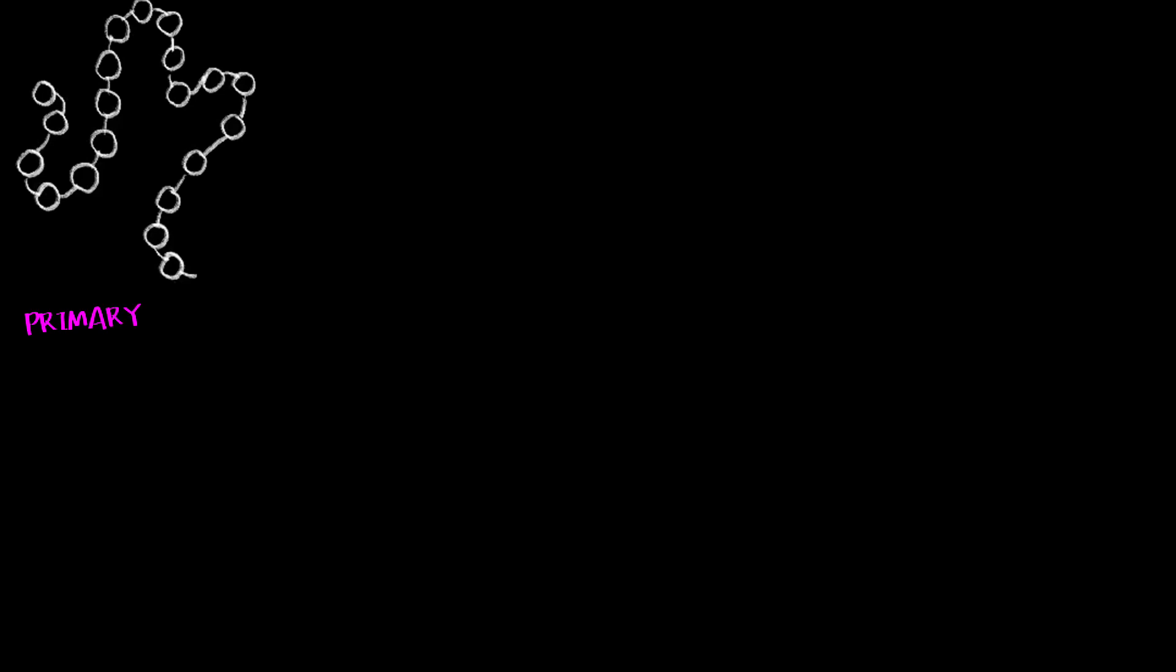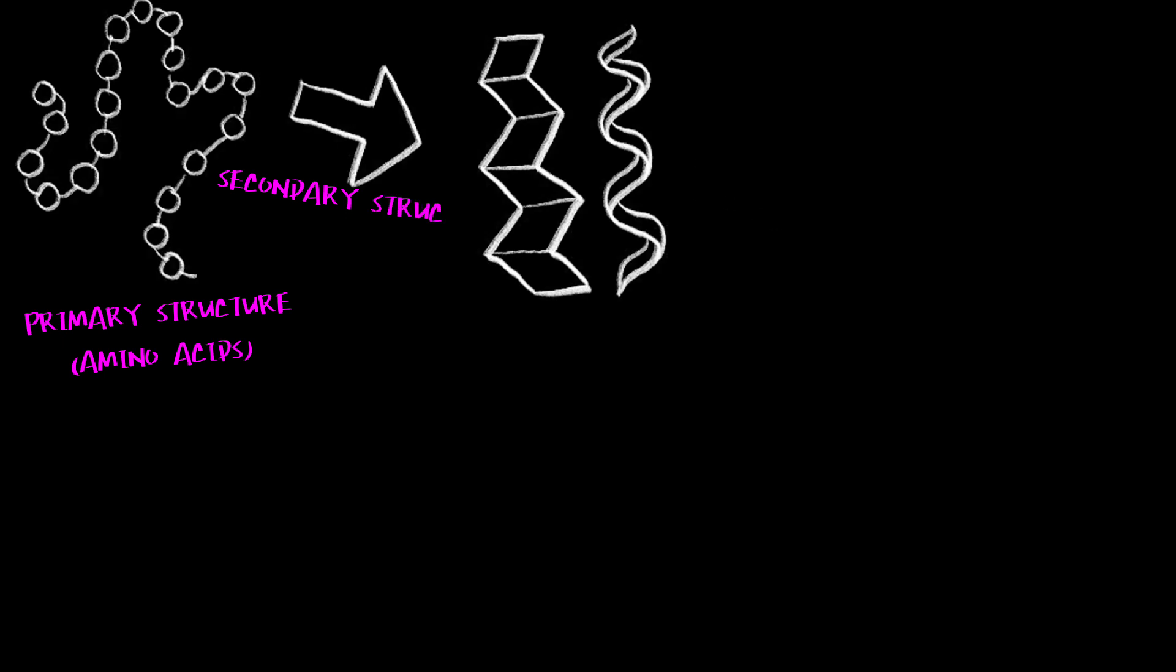Now, this process begins with nucleation, where the primary structure, which is the chain of amino acids that determines how the proteins fold and the final function it serves, is made. Then, it begins to fold into local, secondary structures, like coils and sheets.